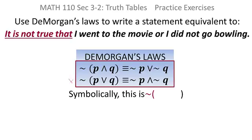Then, because I know now which one I'm going to be using, I can go back up to the original statement and translate it so that it looks like the left hand side of that second DeMorgan's Law.